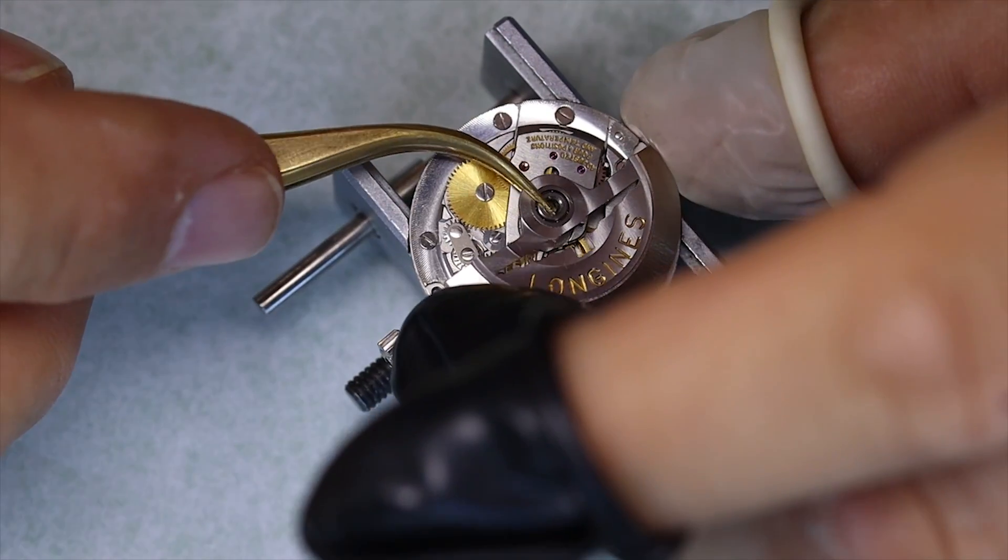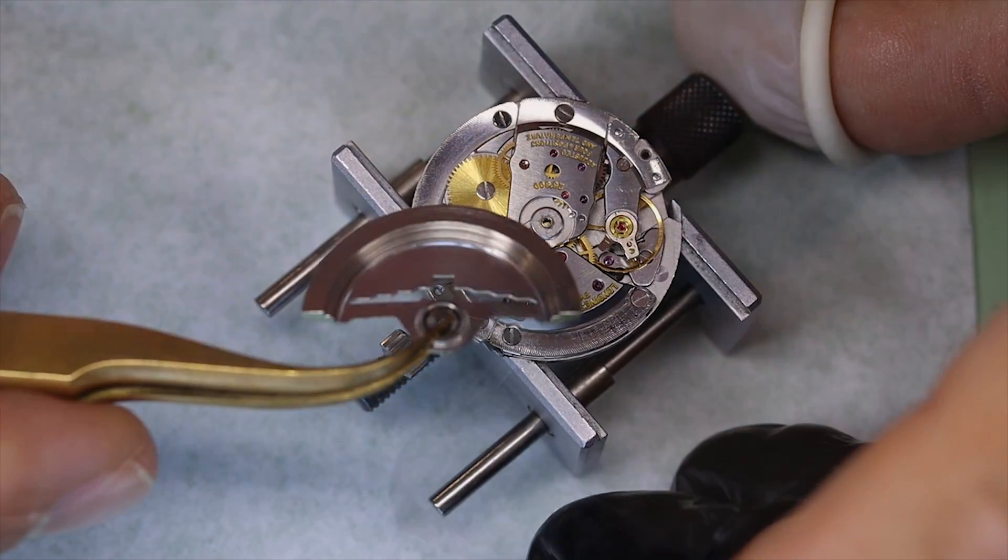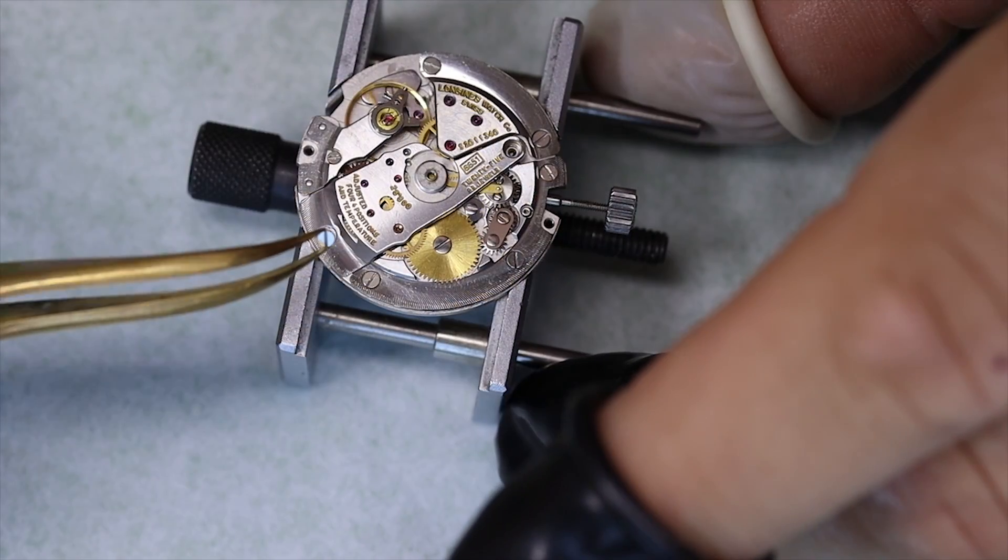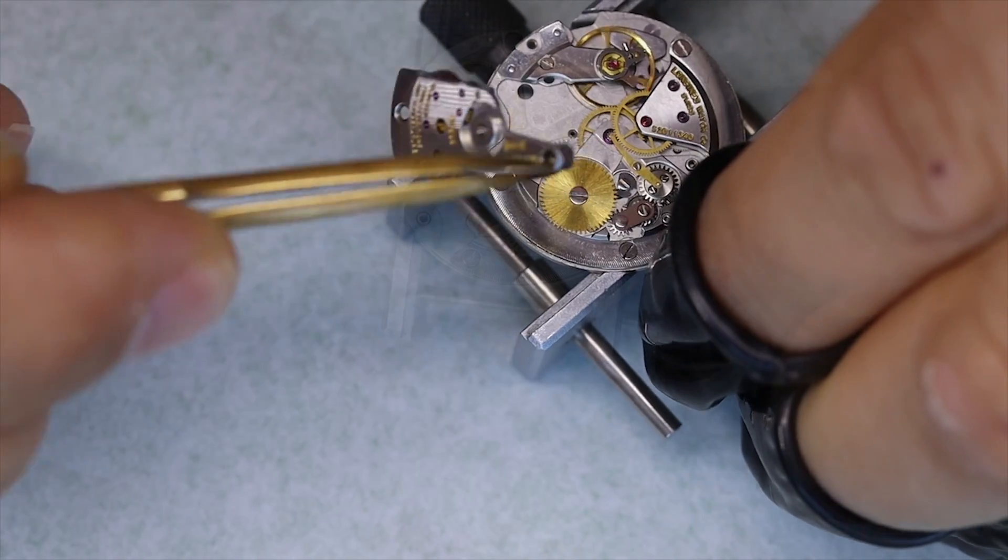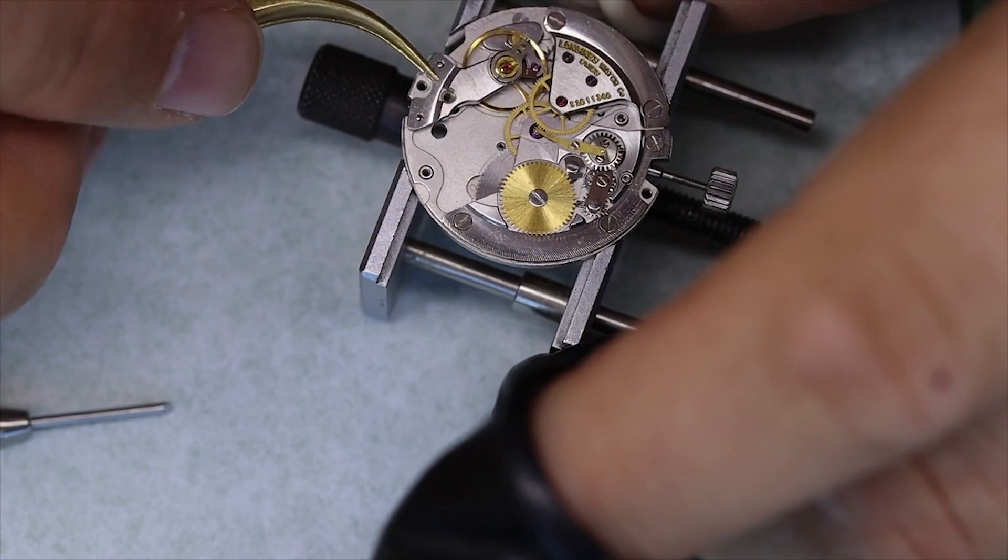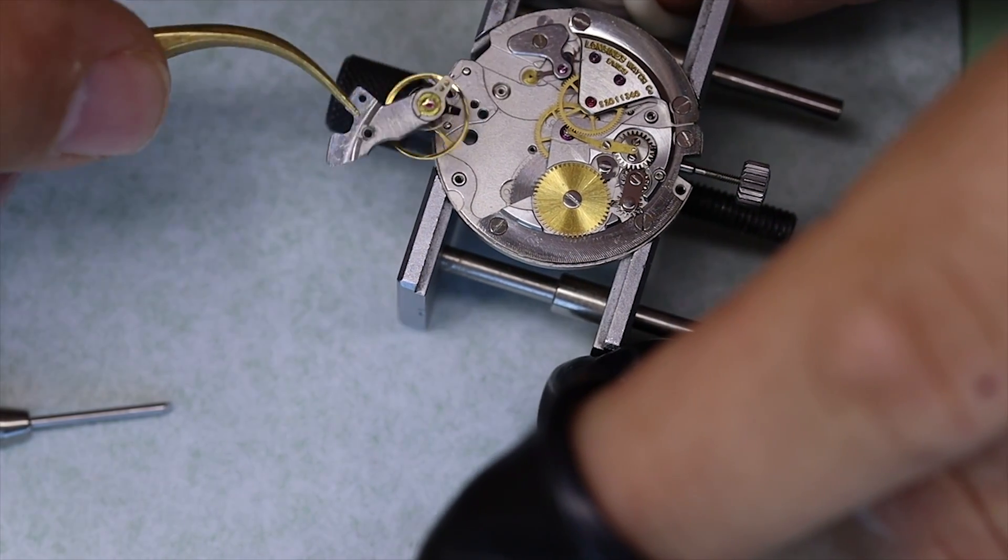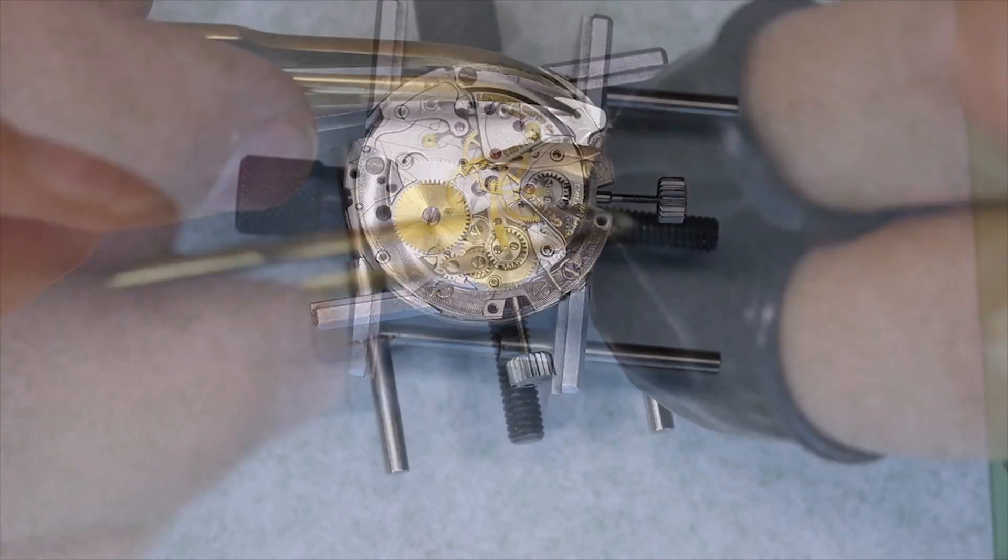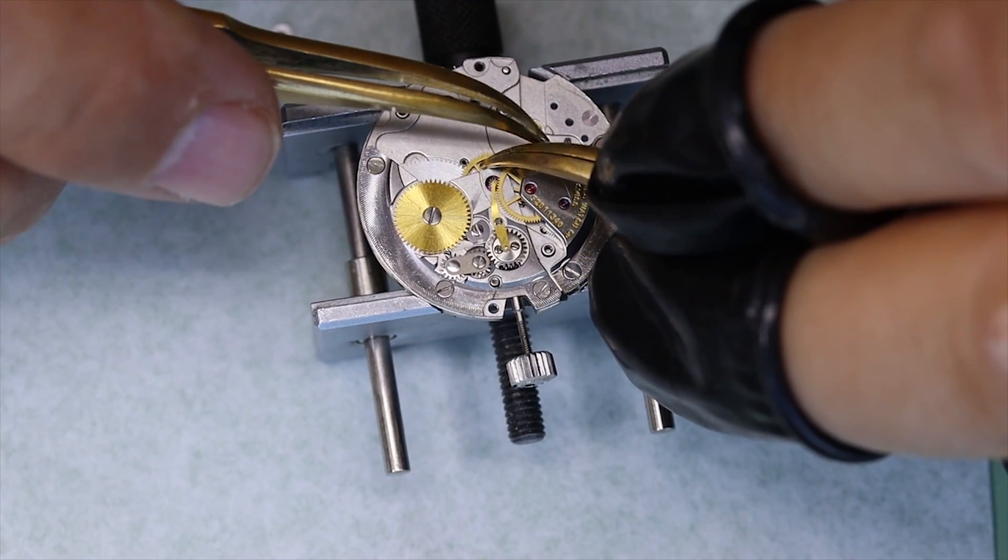It would be better to take the rotor off before we take the movement out of the case, but who am I to listen to my own advice. With the automatic bridge off we're gonna let down the mainspring and I'm a little bit skeptical to whether or not there is more power in the train. So we're going to be a little bit careful taking off the pallet fork.